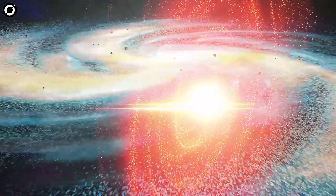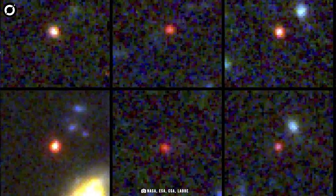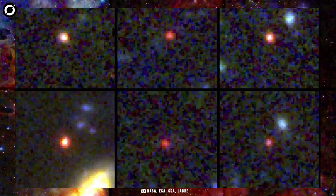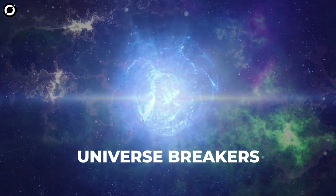The six gargantuan galaxies, which contain almost as many stars as the Milky Way despite forming only 500 to 700 million years after the Big Bang, were dubbed universe breakers by the team of astronomers that spotted them.